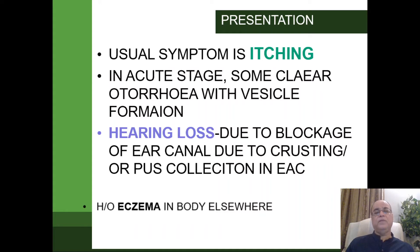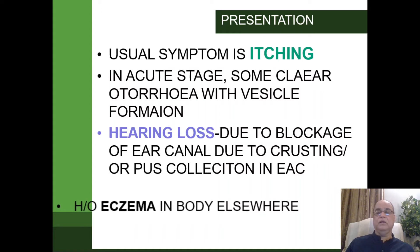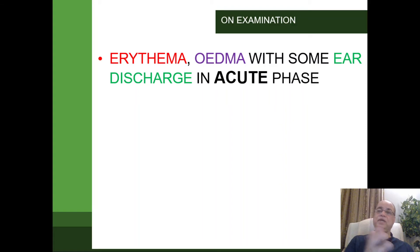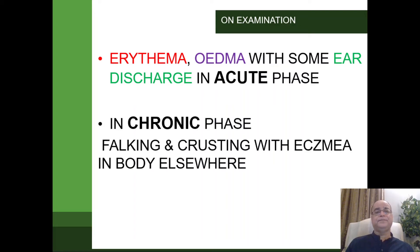There will be a history of eczema elsewhere in the body. On examination in the acute phase, we expect erythema and edema with ear discharge that will be transparent, or purulent if superadded infection is present. In the chronic phase, there will be flaking and crusting, along with eczema elsewhere in the body.